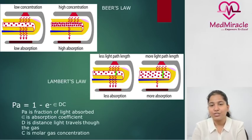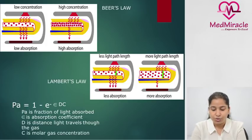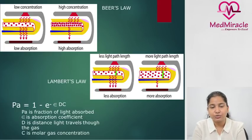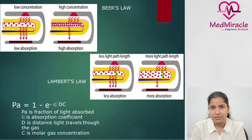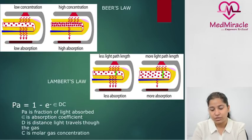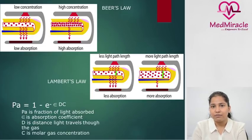Pulse oximetry is based on two important laws: Beer's law and Lambert's law. According to Beer's law, absorption depends on the concentration of the molecule absorbing the light radiation. So as the concentration of hemoglobin and oxyhemoglobin increases, the absorption of that particular wavelength also increases. According to Lambert's law, as the distance traveled by light increases, the amount of absorption also increases.